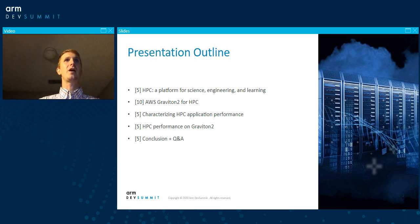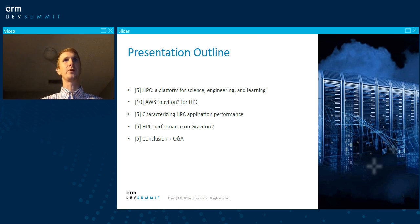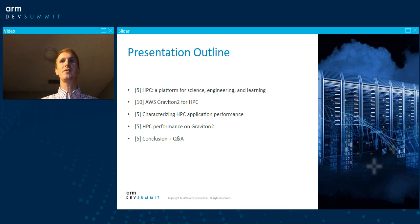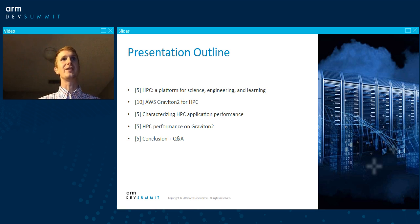The outline of our talk today: I'll take five minutes to introduce the idea of high-performance computing, HPC, and level set on what we mean when talking about HPC or supercomputing. Stefan will give an overview of AWS Graviton2 and how it can be used for HPC workloads. Then I'll talk about how we can characterize HPC application performance and show some results from key workloads running on the Graviton2.